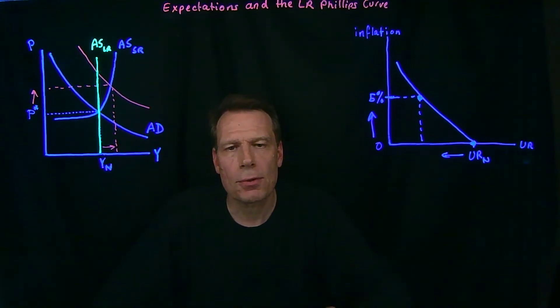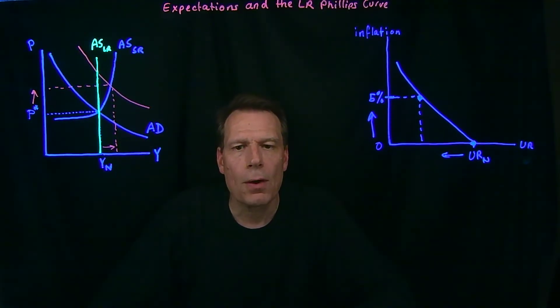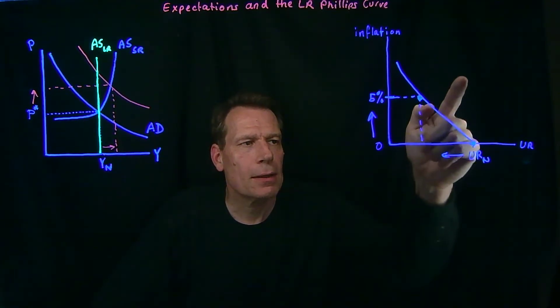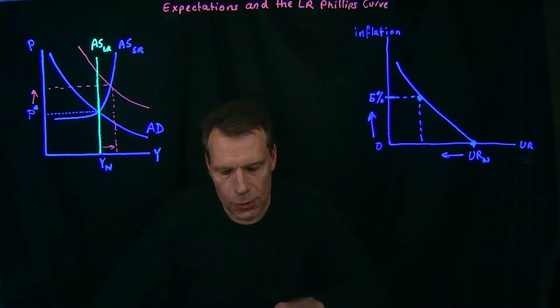So, once we get to this point on the Phillips curve, where we now have a higher expected inflation rate, workers re-evaluate their employment decisions and return back to the original natural rate of unemployment. Same real wage, same employment decisions.